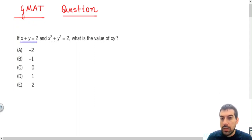We know that x plus y equals 2, and x squared plus y squared equals 2. How can we find out this value?